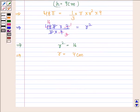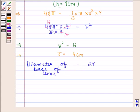Now we have to find its diameter. So diameter of base of cone is equal to 2r. Substitute the value of r. r is equal to 4 cm, so this is equal to 8 cm.